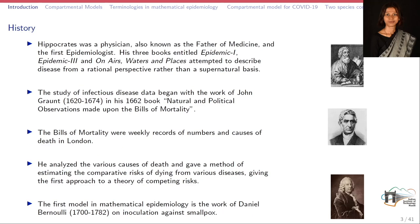Let us first see how Epidemiology evolved in history. The first name that comes to mind is Hippocrates, who was actually a physician and was actually the first Epidemiologist. He wrote three books entitled Epidemic 1, Epidemic 3, and On Airs, Waters and Places. He attempted to describe diseases from a rational perspective. Before him, there were more superstitious and mythological beliefs about diseases. He was the first one who actually gave a scientific explanation to disease and was called the first Epidemiologist.